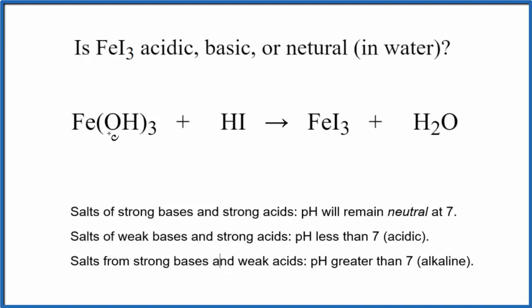So we have the base iron(III) hydroxide - it's a base, it's an OH hydroxide bonded to a metal, that's our base. And hydroiodic acid, this H in front tells us it's probably an acid. So we have this acid and the base, they neutralize each other and we get this iron(III) iodide plus water.